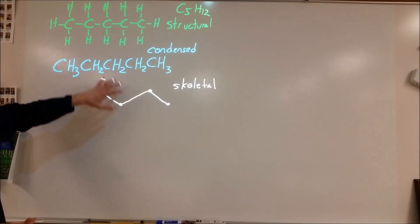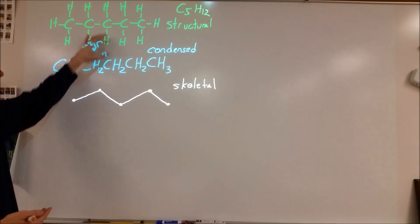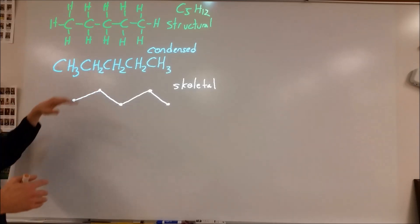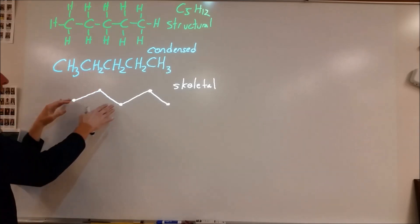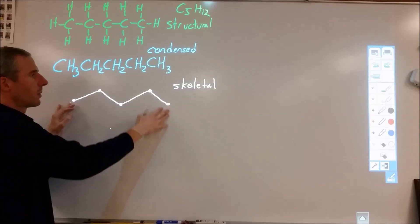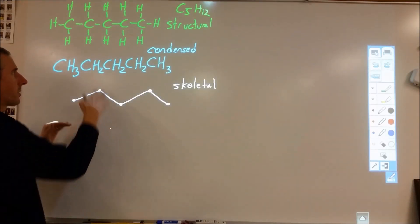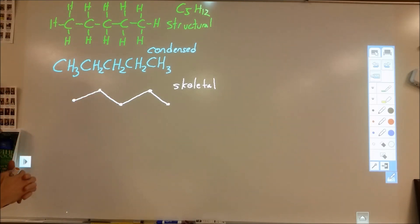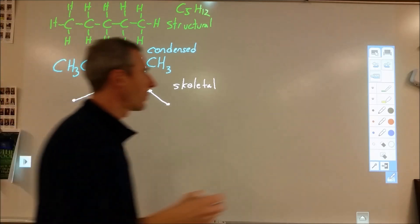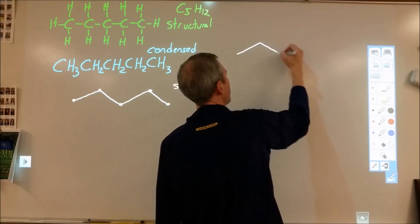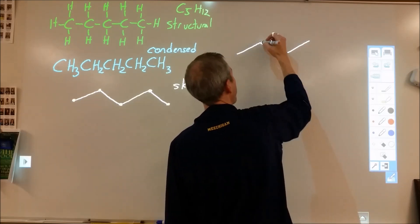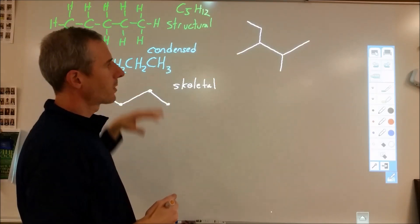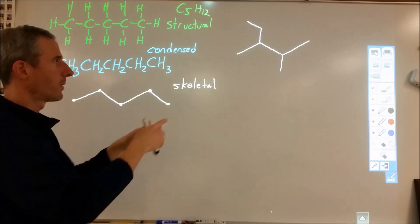What are the benefits and costs of these representations? The Lewis structure gives you the most information. The condensed form is easier to write but new learners can lose sight of structure. The skeletal structure is the best for expert organic chemists because it's the easiest and quickest to draw — representing a large structure in full detail is very long, whereas a skeletal structure is much simpler. Let's go ahead and try: take this skeletal structure and produce the condensed structure or structural formula.